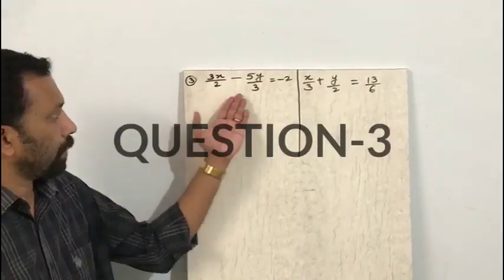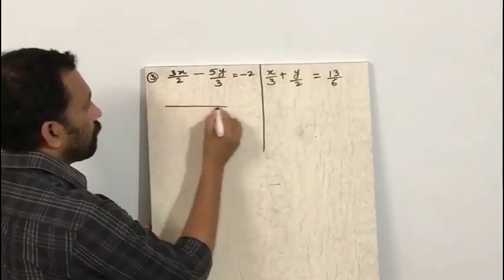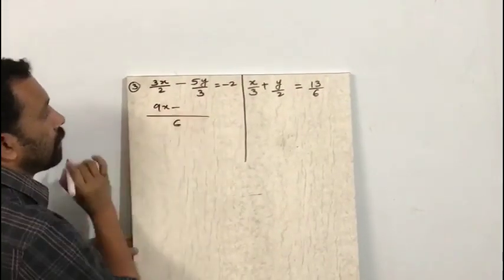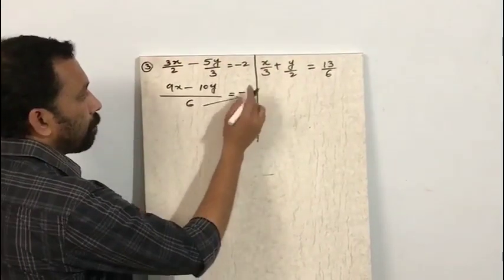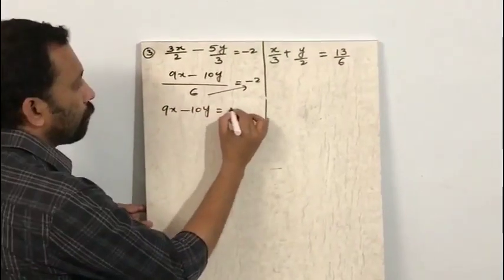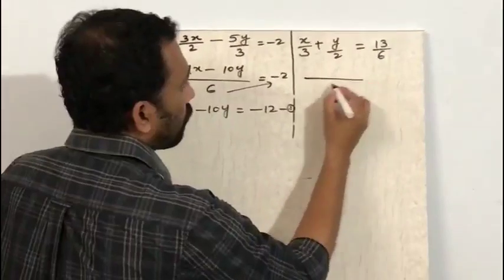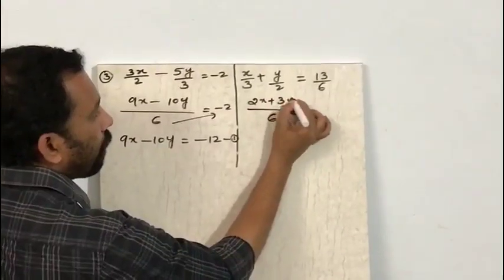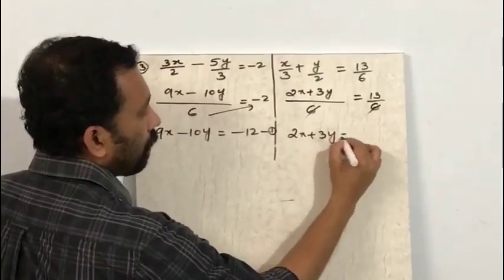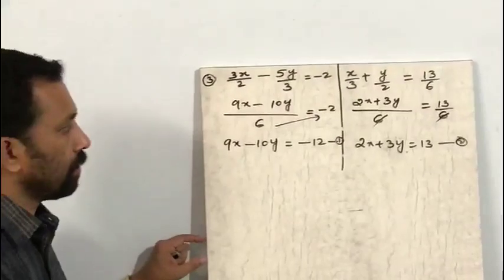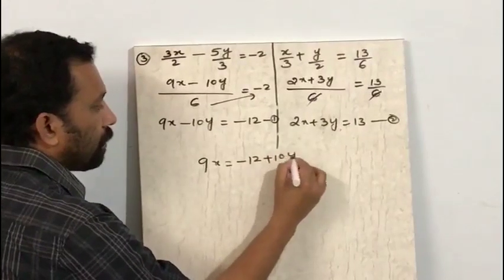Here is question number 3, another pattern involving fractions. First we take the LCM, which is 6. This gives 9x minus 10y equals minus 12 — equation 1. For the second equation, the LCM is also 6, giving 2x plus 3y equals 13 — equation 2. These are the two simplified equations.